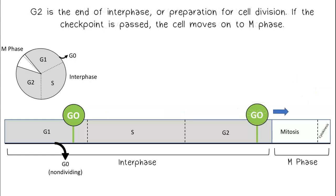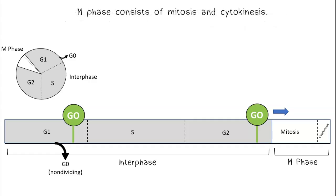G2 is the end of interphase, or preparation for cell division. If the checkpoint is passed, the cell moves on to M phase. M phase consists of mitosis and cytokinesis.